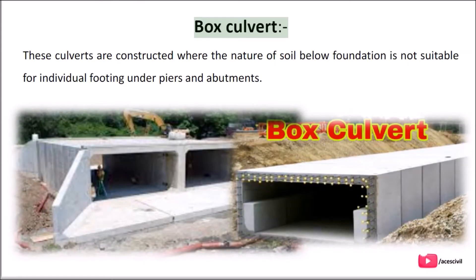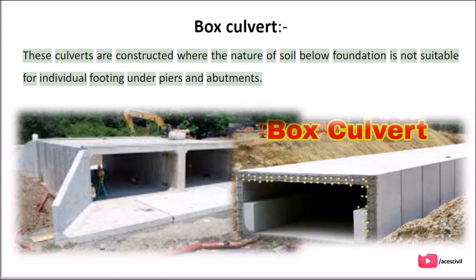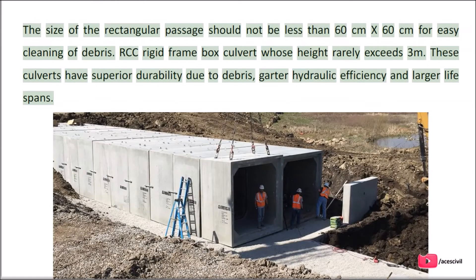Box culverts are constructed where the nature of soil below the foundation is not suitable for individual footing under piers and abutments. The size of the rectangular passage should not be less than 60 cm x 60 cm for easy cleaning of debris. RCC rigid frame box culverts rarely exceed 3 m in height. These culverts have superior durability, greater hydraulic efficiency, and longer life spans.